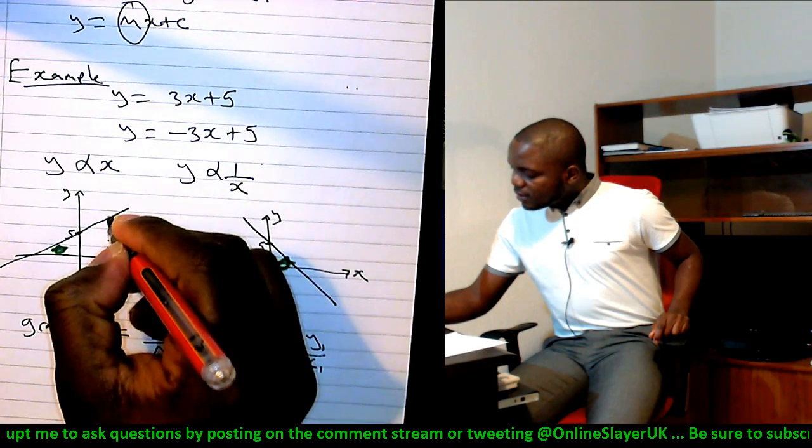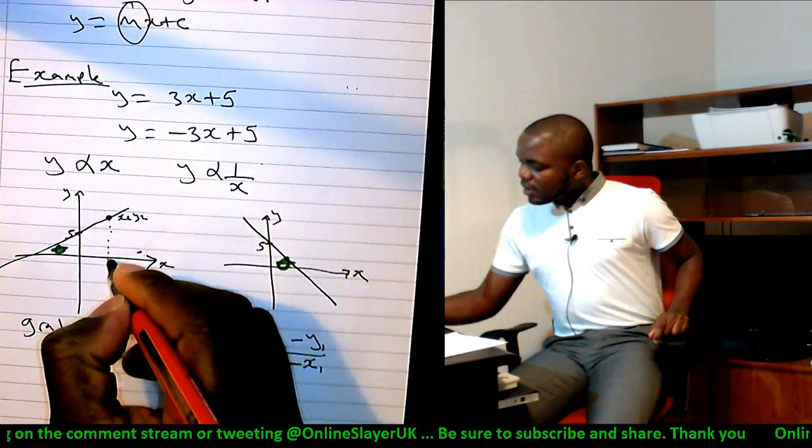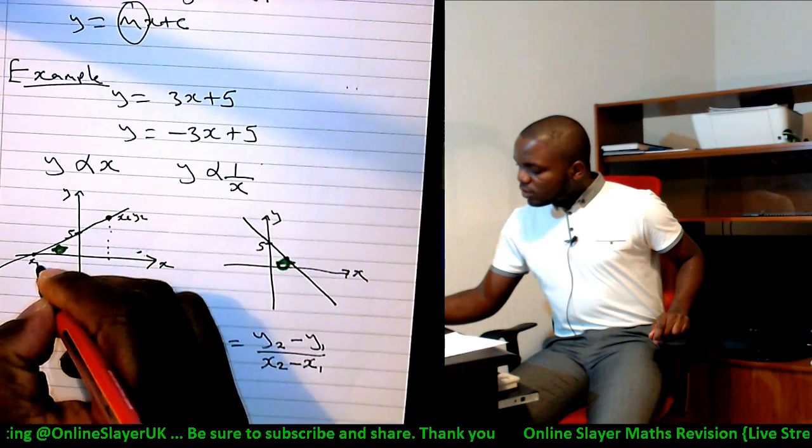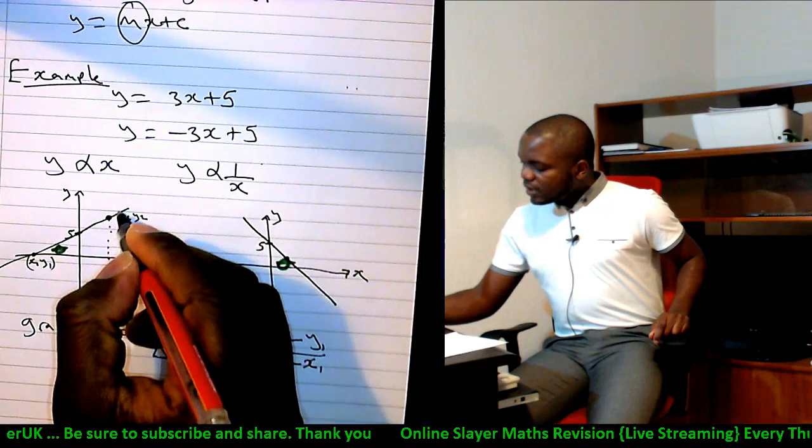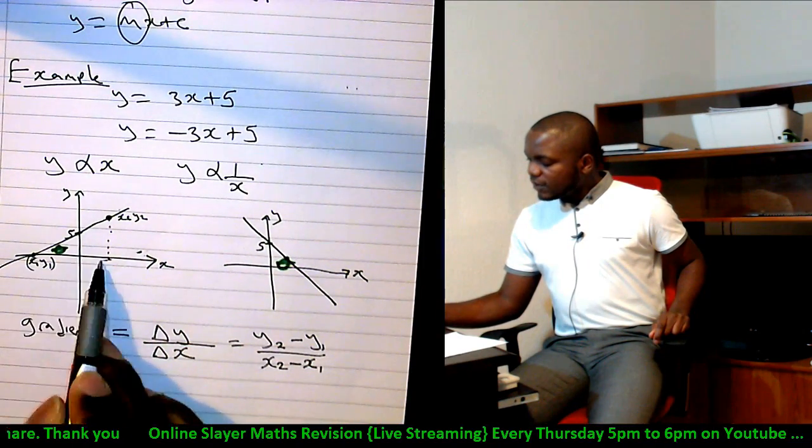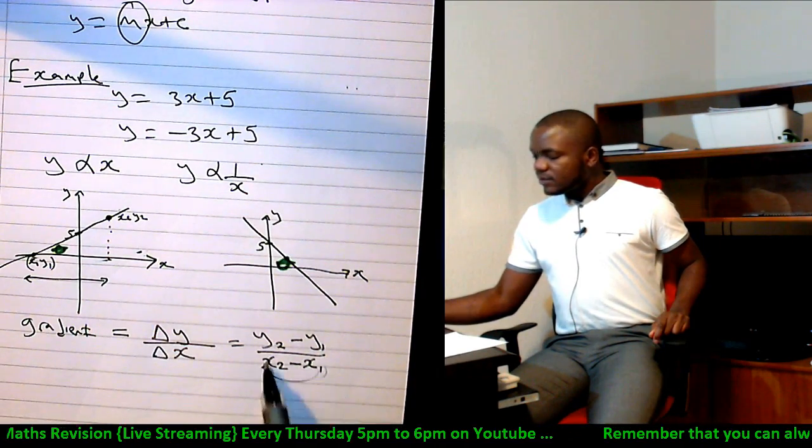So if I knew what the point here is, x2 y2, and I knew what the point here is, x1 y1, then it means that the difference between the x1 and x2 value, which is this, is this, and the difference between the y2 value and the y1 value, which is this height, is this.